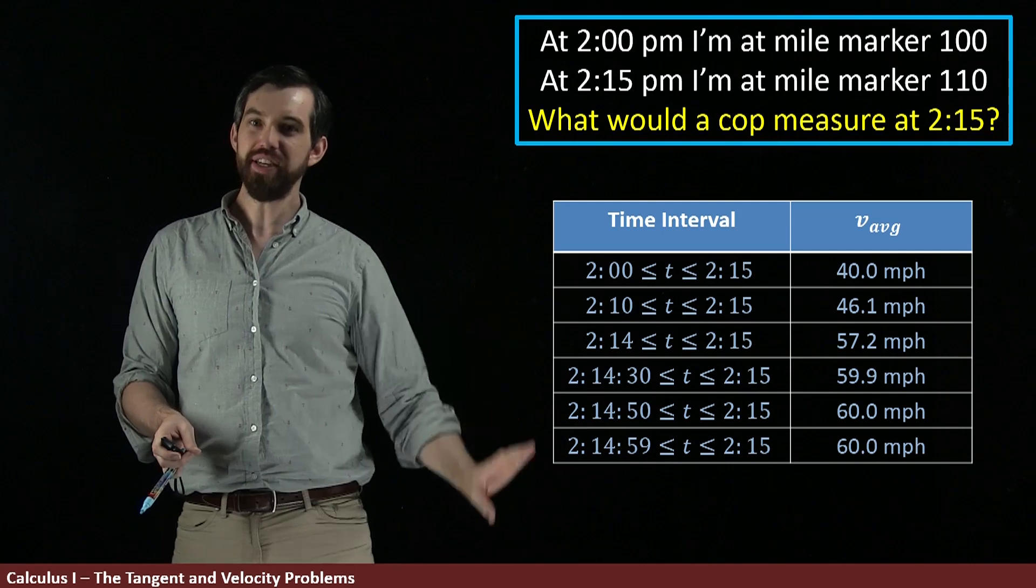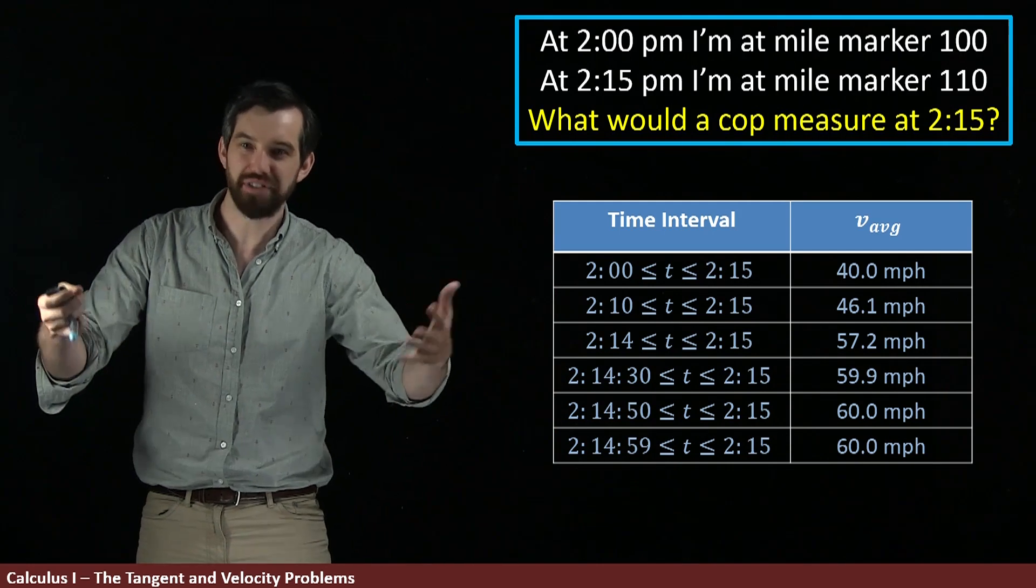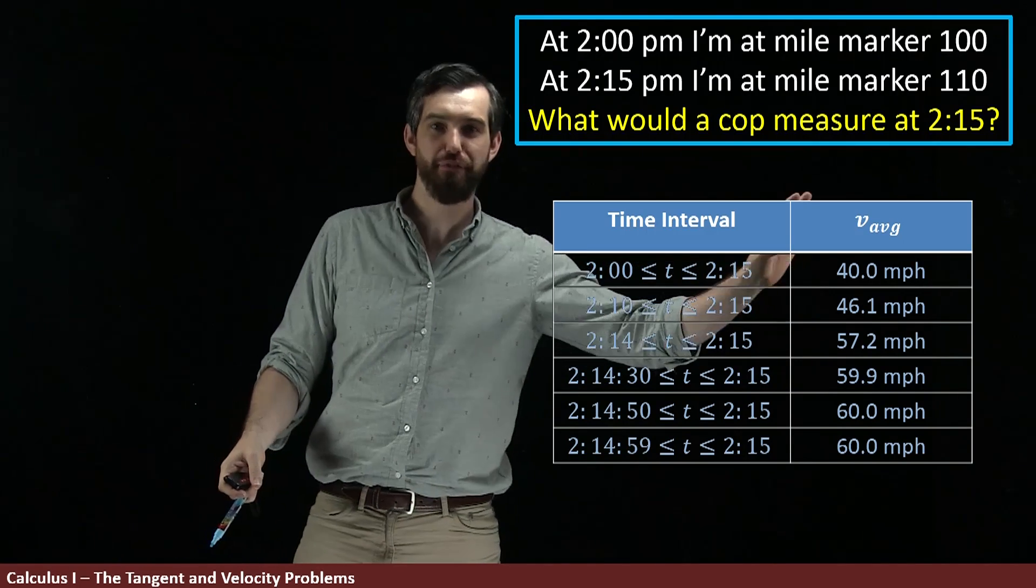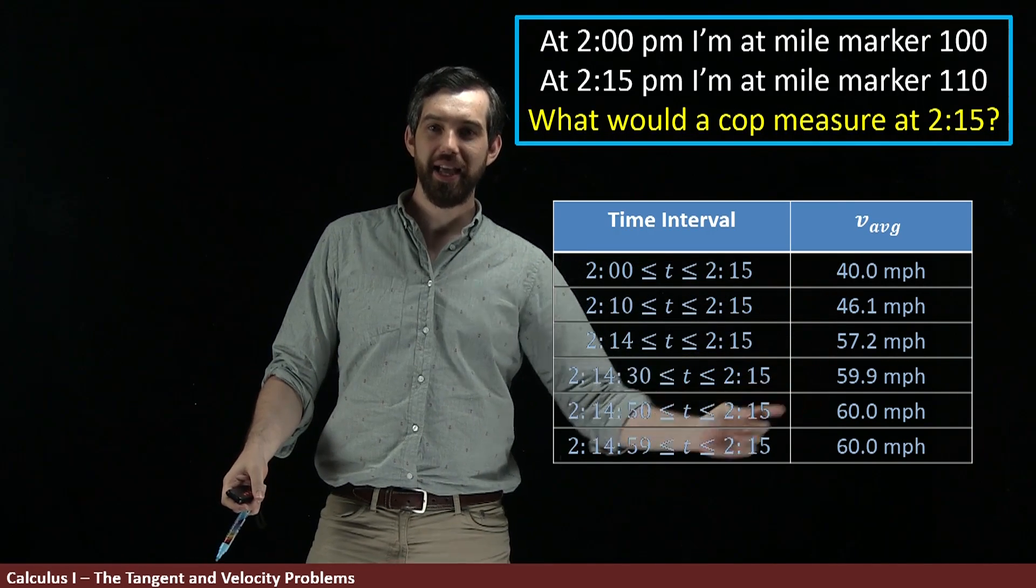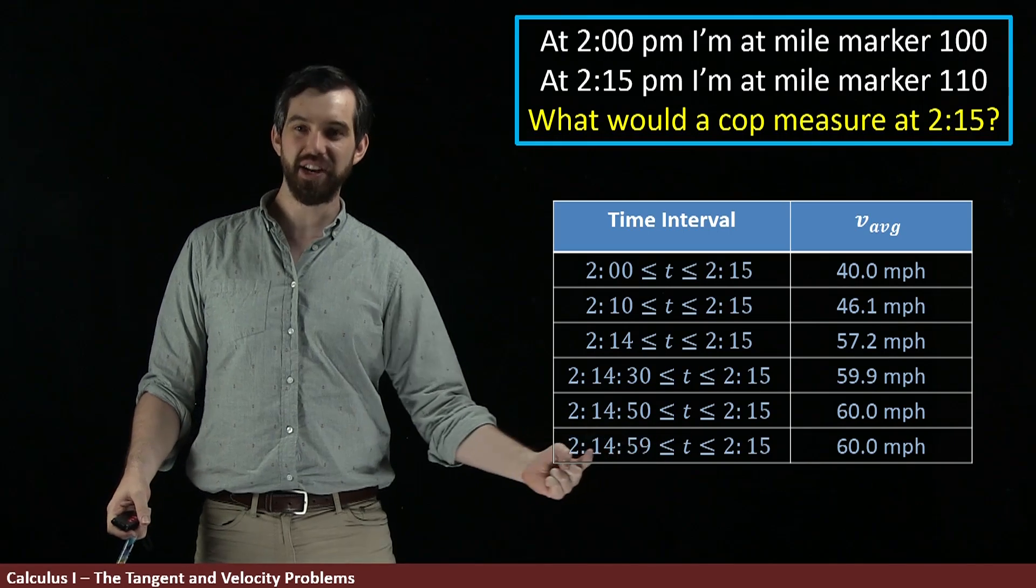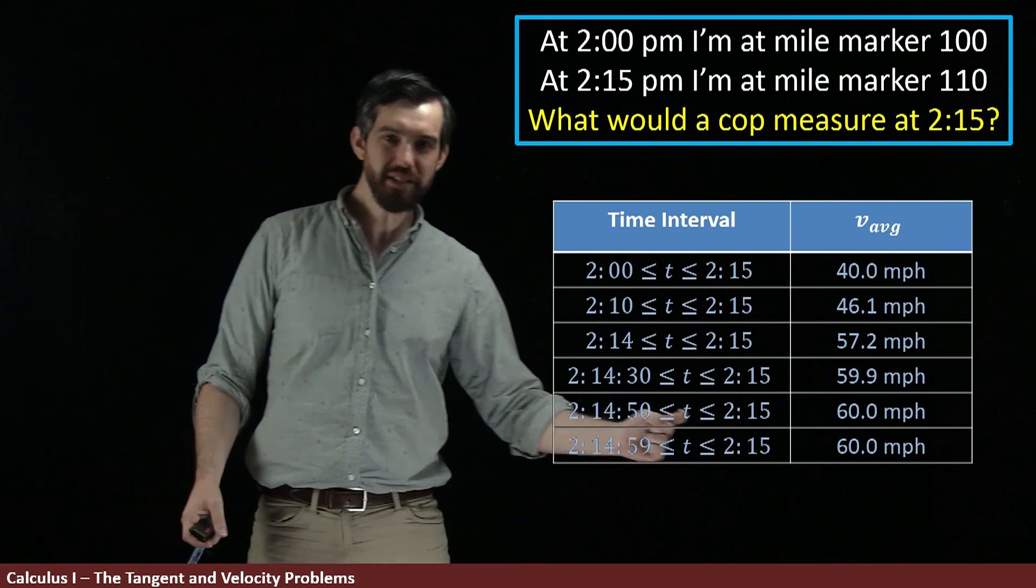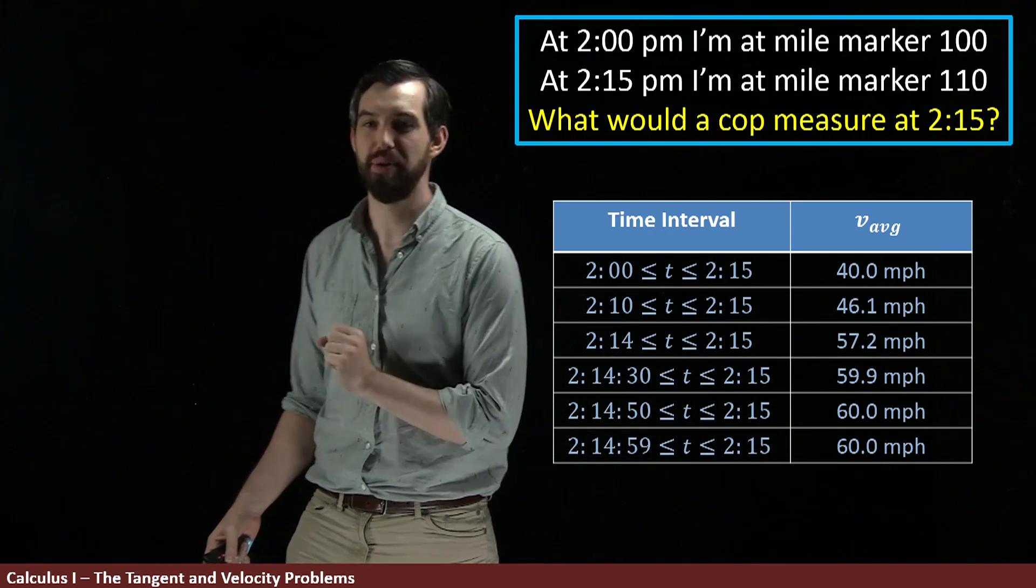So then for each of these time intervals, we know if we have a time interval, we can compute the average velocity. So I'm just going to imagine we've gone and done that and we've got the 40, 46 going down and then in this last second here, this one tiny little time interval, it appears that we're going 60 miles per hour over that time interval.